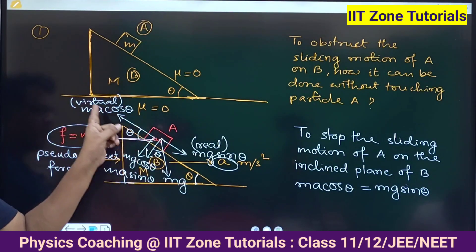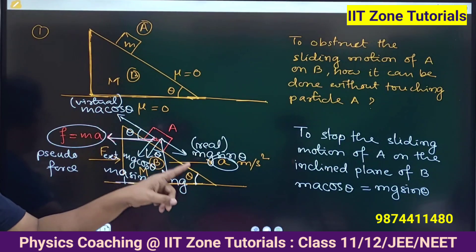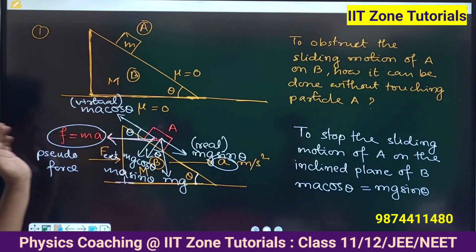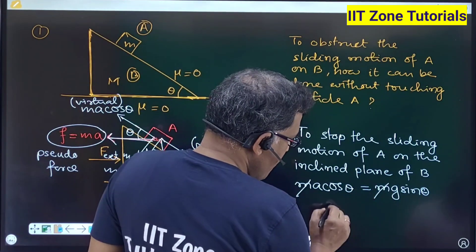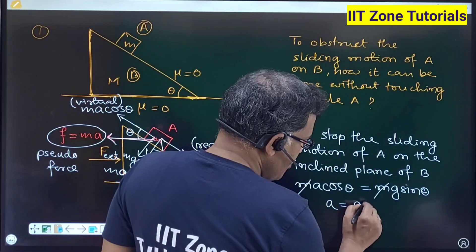if that is insufficient to reach this condition where ma cos theta and mg sin theta equal, that means the condition will not be achieved. The condition can only be achieved at a specific resulting acceleration where that acceleration is equal to g tan theta.